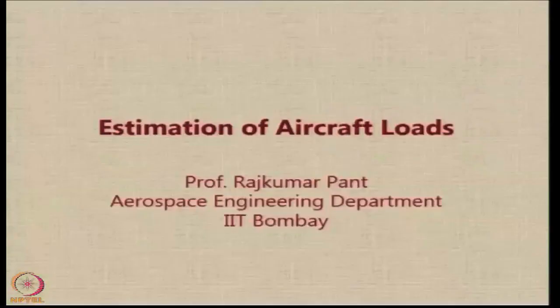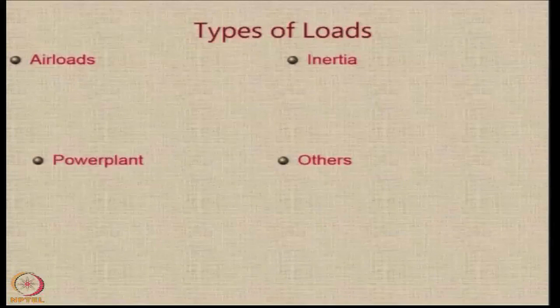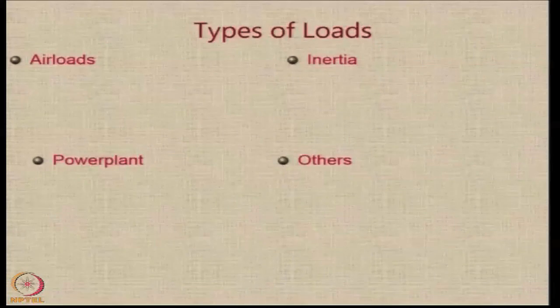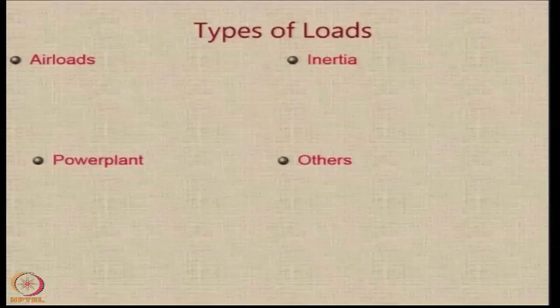Let us have a look at how the loads acting on the aircraft are estimated or specified for various conditions. There are essentially 4 types of loads: air loads, which come because of the relative motion between the aircraft and the ambient air; inertia loads, which come due to changes in acceleration; power plant loads, which come due to the operation of the power plant; and miscellaneous loads, categorized under others.